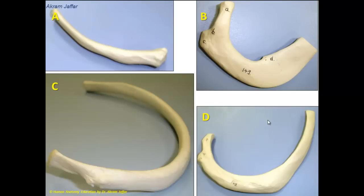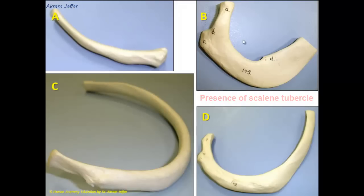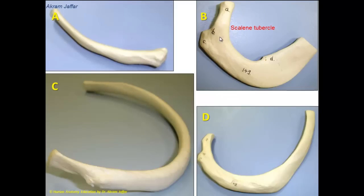In this question, we are asked to match the lettered ribs shown in this picture with some features, and each of these ribs may be labeled with more than one feature. The first feature is the presence of scalene tubercle, which is a characteristic of the first rib. The first rib is the most curved rib, and it has a superior and inferior surface, an internal and external border. The internal border is characterized by the presence of the scalene tubercle for the attachment of the scalenus anterior muscle.